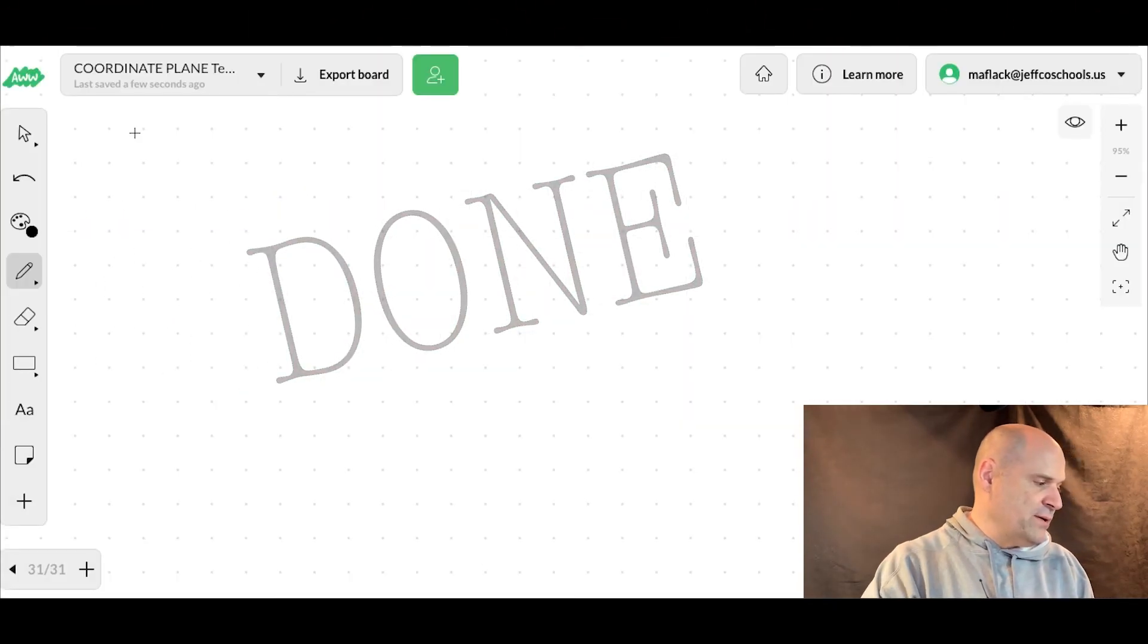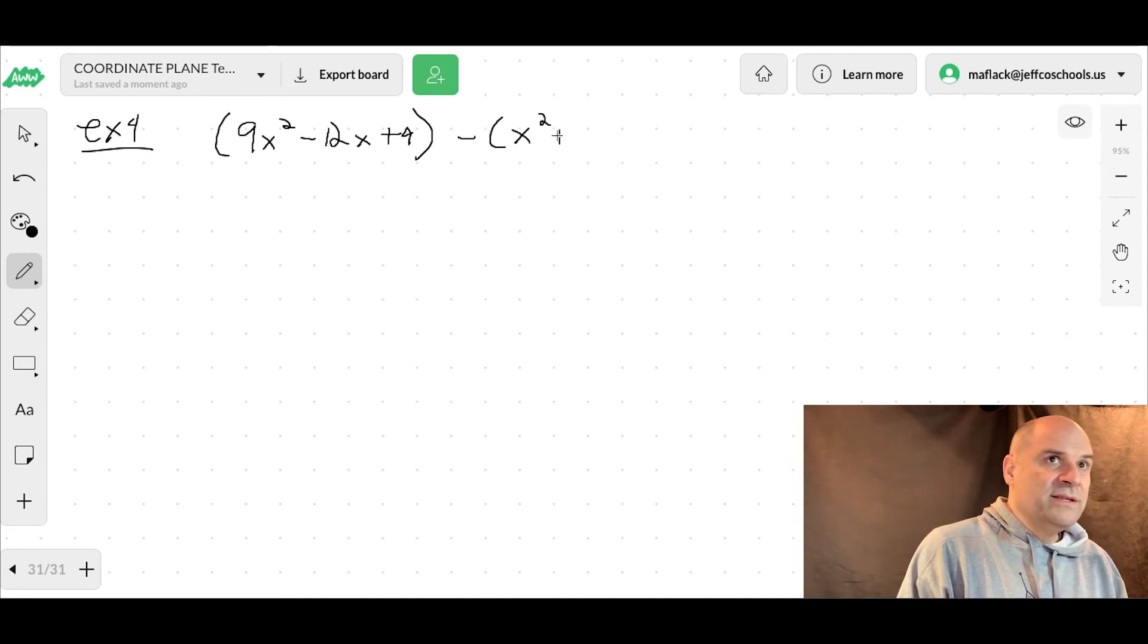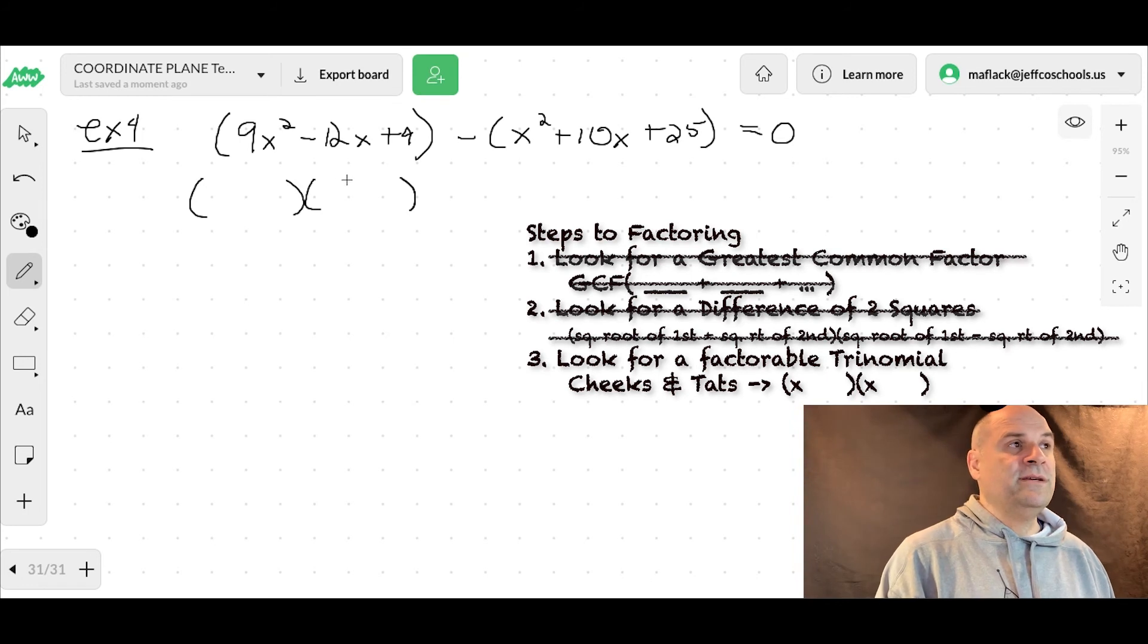All right, example 4 says, solving a quadratic equation using perfect squares. All right, now this is kind of exciting because you start off with this crazy equation. So 9x squared minus 12x plus 4 minus x squared plus 10x plus 25 equals 0. So when in doubt, factor it out. That always makes me feel better. This just happens to be a square trinomial. So let's just, for the fun of it,